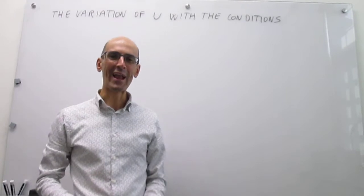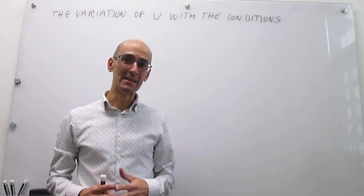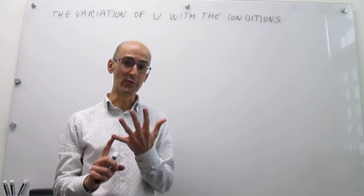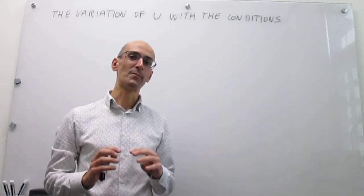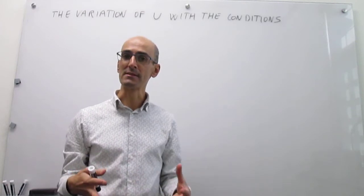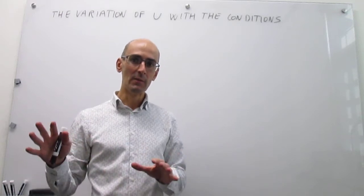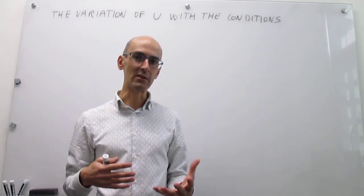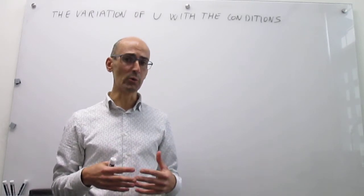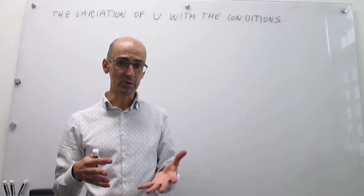In this video, we review how the internal energy depends on the conditions. The conditions that a sample is in determines the physical state, and the variables of this physical state are number of moles, pressure, temperature, and volume. If we assume constant composition — meaning you have a pure substance like a gas with no transformations, either phase transitions or chemical reactions — then it's not necessary to study the dependence of the internal energy on the number of moles. So we're going to focus on understanding the variation of the internal energy on temperature, pressure, and volume.